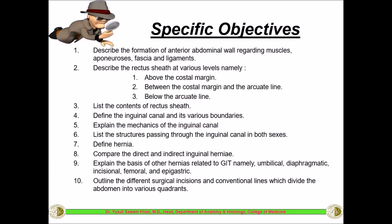The first objective covers muscles, aponeurosis, fascia, and ligaments. The second is to describe the rectus sheath at various levels: above the costal margin, between the costal margin and the arcuate line, and below the arcuate line. The third is to list the contents of the rectus sheath. The fourth is to define the inguinal canal and its various boundaries, and to explain the mechanics of the inguinal canal.